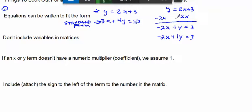So if I were to rewrite this equation again in standard form, this now becomes negative 2x plus 1y equals 3. And now I can write that as a matrix.